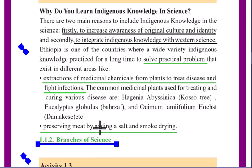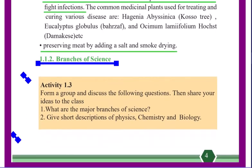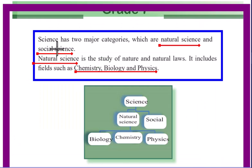Another example is preserving meat by adding salt or smoke. This illustrates the difference between indigenous and conventional science. Conventional science has two major categories, which are natural science and social science.